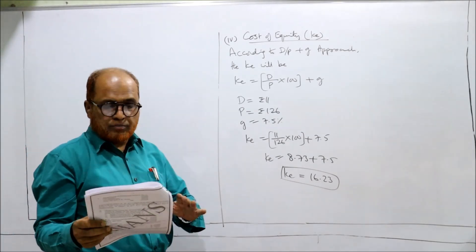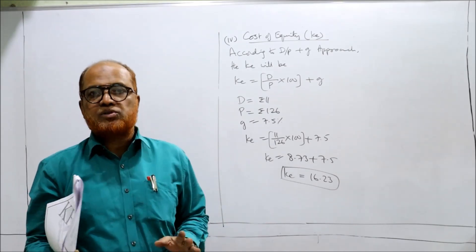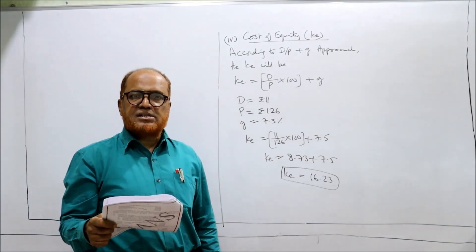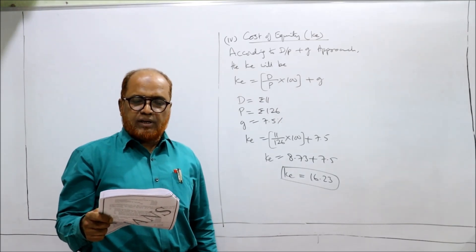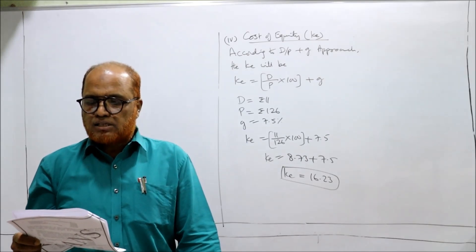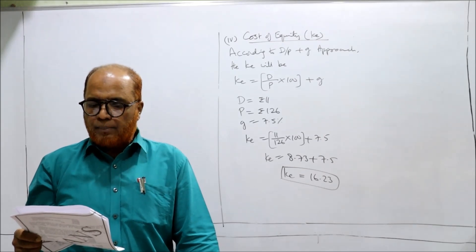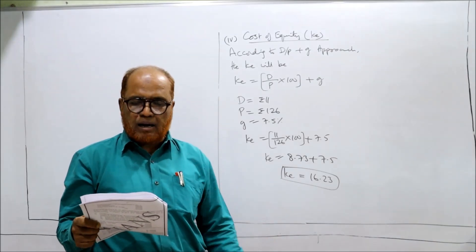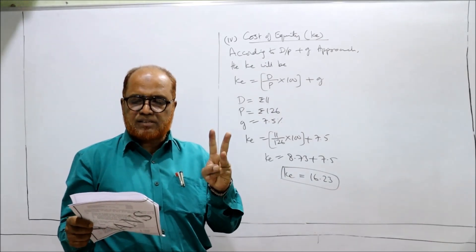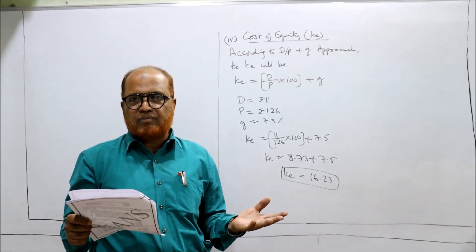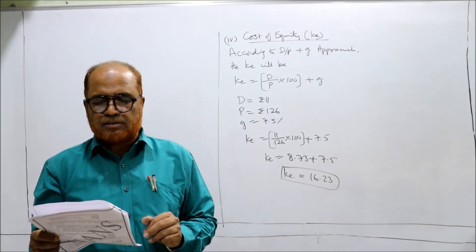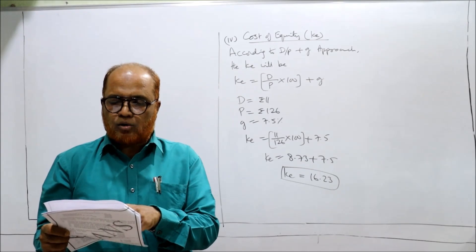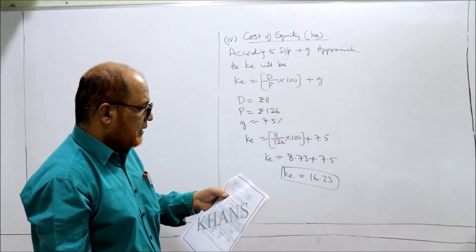Problem 31 onwards, problems are given as homework. We have already done 30 problems, so remaining problems you have to do for your practice. X Limited has the following capital structure on 31 March 2017: equity share capital 20,000 equity shares, rupees 40 lakh; 16% preferential capital; 14% total. The company pays dividend at 10%, so we can take Ke as 10%. You are required to compute the WACC based on the existing capital structure.